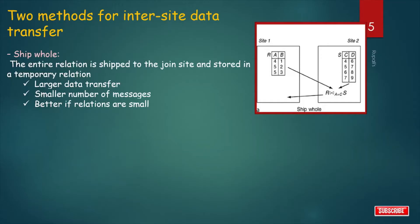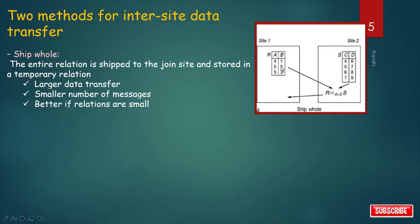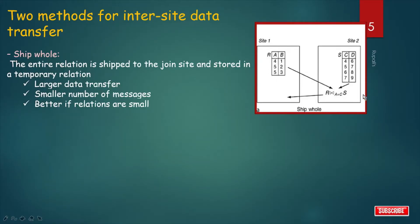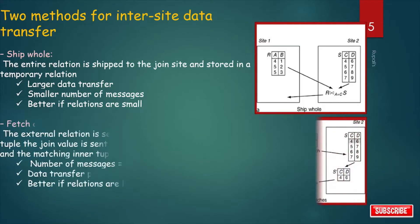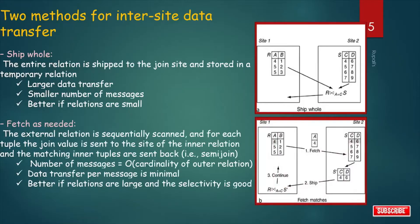There are two methods for inter-site data transfer. In the figure there are two sites — site 1 and site 2 — with table R at site 1 and table S at site 2. The first method is 'ship whole': the entire relation is shipped to the join site and stored in a temporary relation. This results in larger data transfer but only one message is required. It is better when relations are small.